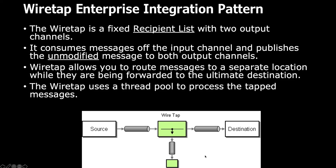Wiretap allows you to route messages to a separate location while they are being forwarded to the ultimate destination. From a technical implementation perspective, especially in the Camel world, the wiretap uses a thread pool to process the tapped messages, so it doesn't interrupt the performance of the existing workflow — another thread handles that message separately.